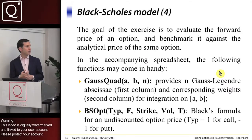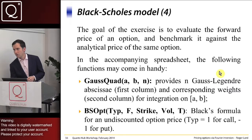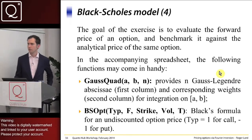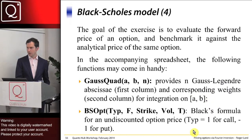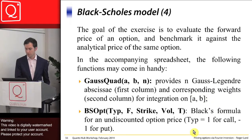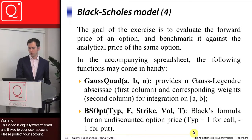In the accompanying spreadsheet there are two handy functions: GaussQuad, which provides Gauss-Legendre abscissae and weights over an integration interval A to B, and BSOps, which is a closed-form Black-Scholes or Black's formula implementation for an undiscounted option price, be it a call or a put.